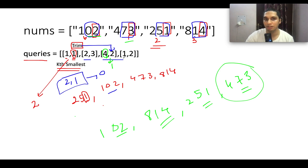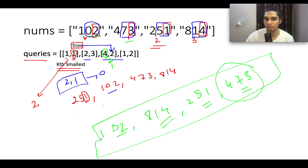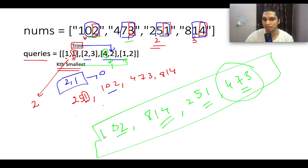Similarly, the next query is (1, 2) — k=1 and trim=2. We have already sorted the elements based on the rightmost 2 digits. We are looking for the 1st smallest element, which is 102. It occurs at index 0 in the original array. So the answer corresponding to this query is 0.